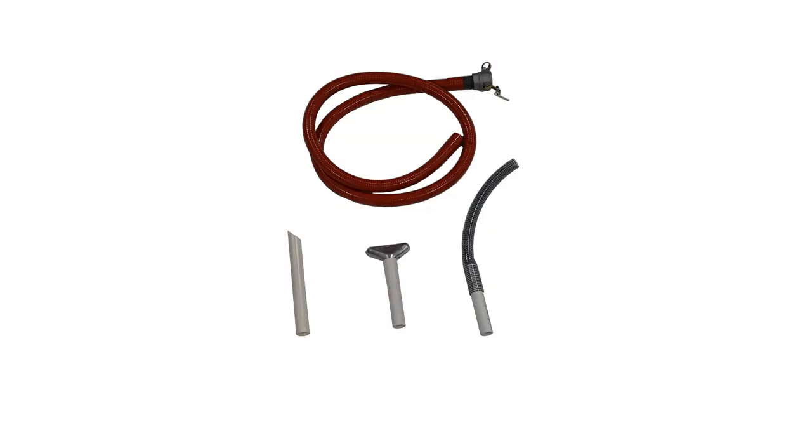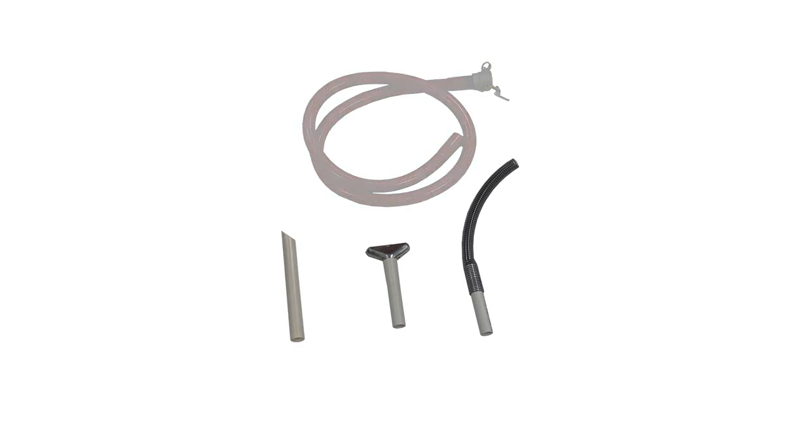Each sump shark comes with a 1 1⁄2 inch by 16 foot heavy duty suction hose. The three suction tools are the straight nozzle, flare nozzle, and flexible nozzle. A 2 inch by 16 foot hose and tools are available as well.